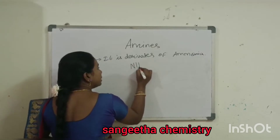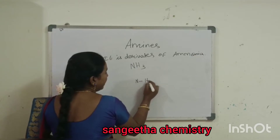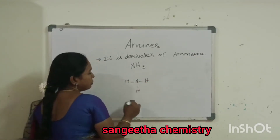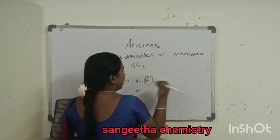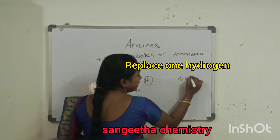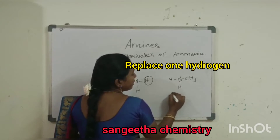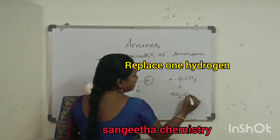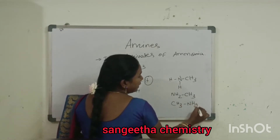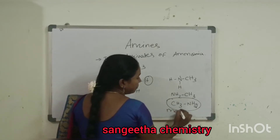Ammonia is the structure we know — NH3. When one hydrogen on the nitrogen of ammonia is replaced by a group, we get an amine. For example, replacing one hydrogen with a methyl group gives us NCH3HH, which is written as NH2CH3 or CH3NH2. This is methyl amine.